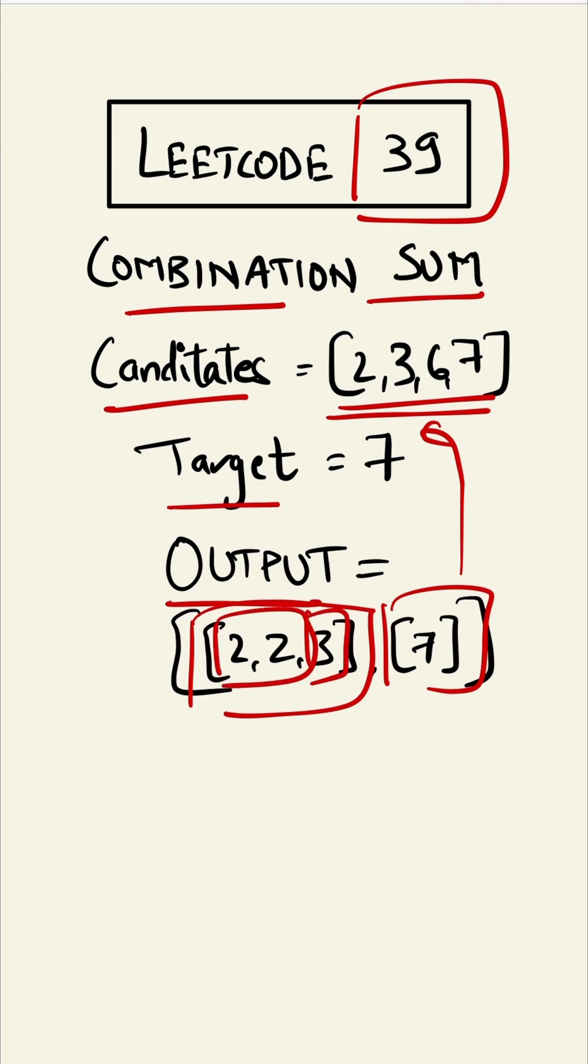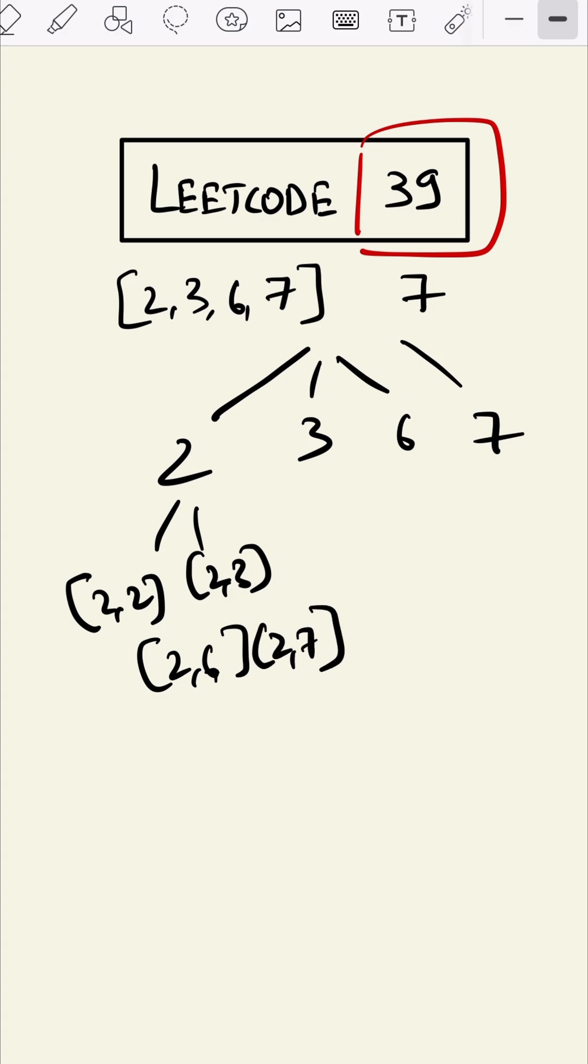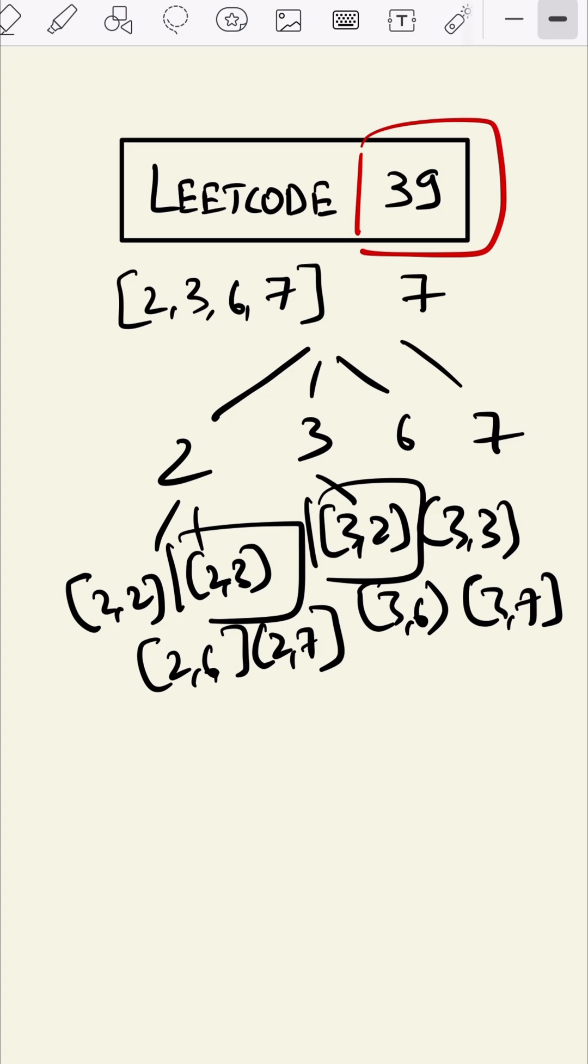We can take permutation and combination at each step to calculate our target. For example, for the first step it would be like two, three, six, and seven. The second step would include two two, then two three, then two six, and then two seven. Each permutation and combination. Similarly here we can say three two, three three, three six, and three seven. But as we can see, this element is coming twice. Let me mark that in a different color. This element is coming twice, so we are having a repetition so we have to avoid that.